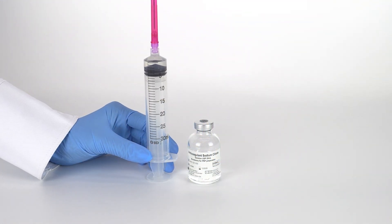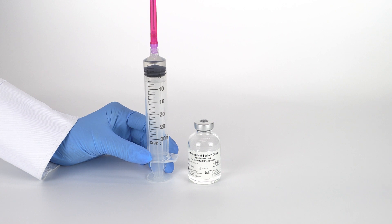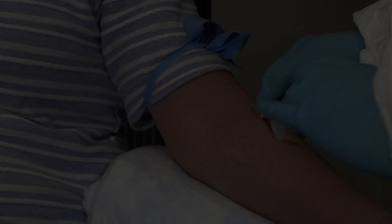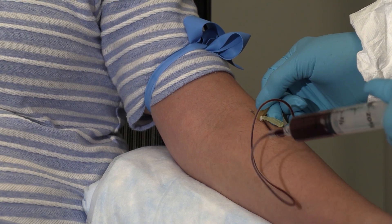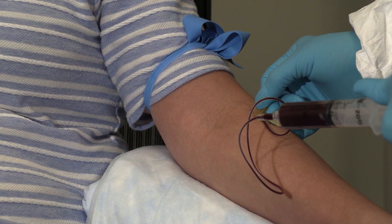Fill a 30-milliliter sterile syringe with 3 milliliters of citrate anticoagulant. Then draw 27 milliliters of blood from the patient, filling the syringe to 30 milliliters.